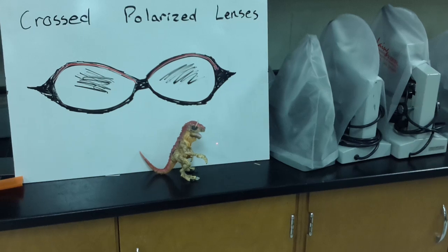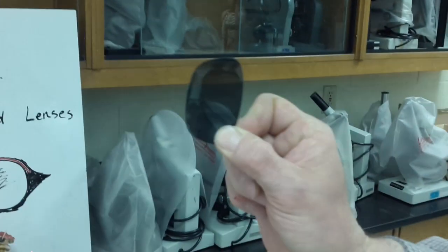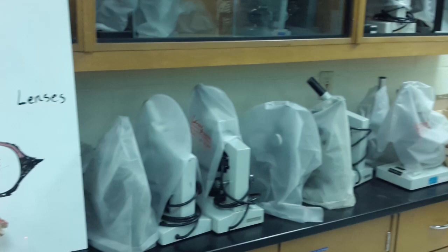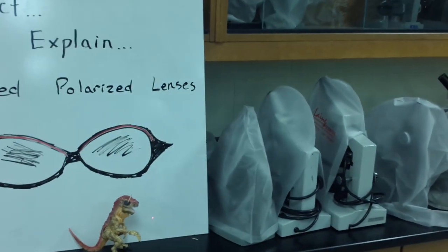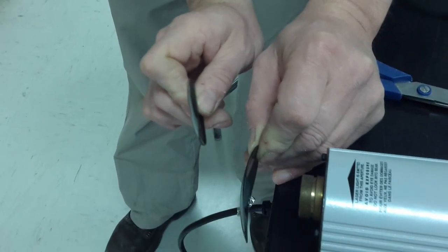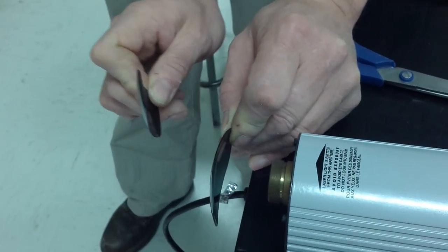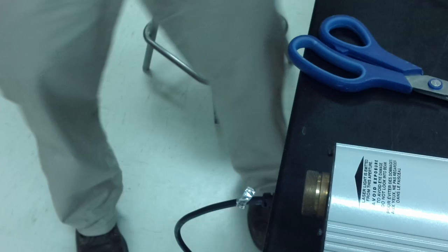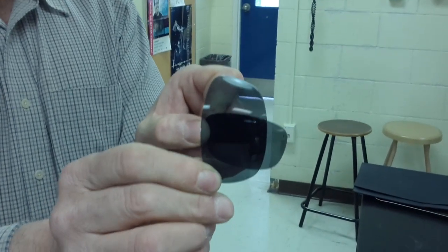We're going to take the other lens, and we're going to turn it in the other orientation. And we are going to put it in the path of the laser as well. So we're going to send the beam through both of these lenses, but they're going to be oriented perpendicular to each other.